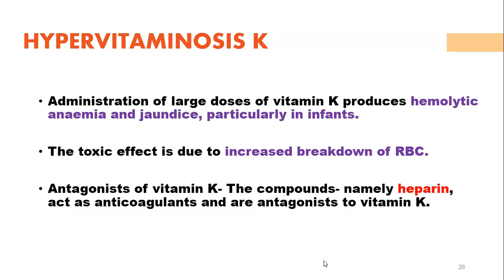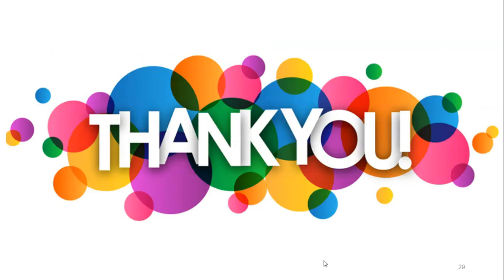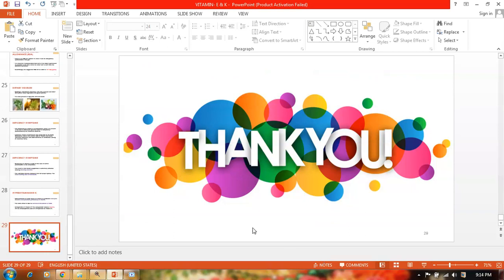If Vitamin K is consumed in large doses, it produces hemolytic anemia and jaundice, particularly seen in infants. These toxic effects are due to increased breakdown of red blood cells. An antagonist to Vitamin K is heparin, which hampers the functions of Vitamin K. This completes our discussion of Vitamin K.